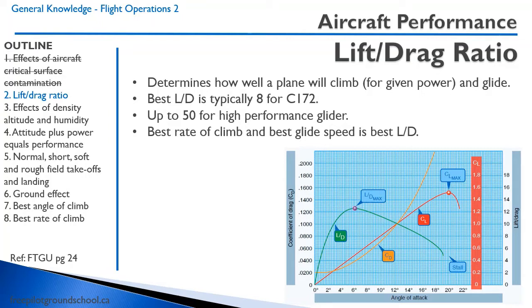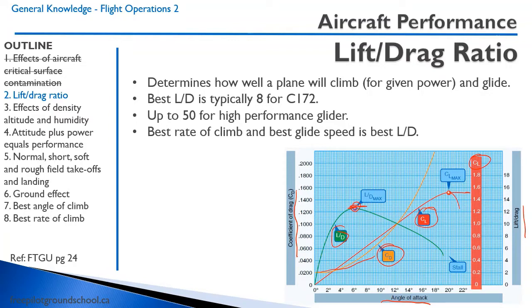Let's go through this diagram. On the left we have the coefficient of drag; on the bottom, the angle of attack — the angle between the wing chord and the relative airflow. The red line is the coefficient of lift, which increases as angle of attack increases until the stall point. The yellow drag line increases exponentially. The green lift-drag ratio peaks at LD max — in this case about 12.5, at an angle of attack of about six degrees.